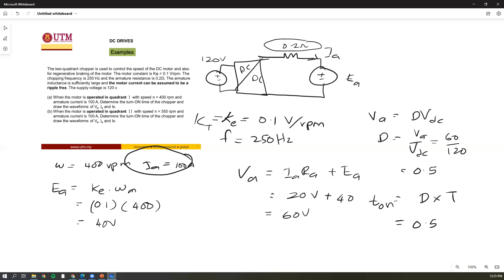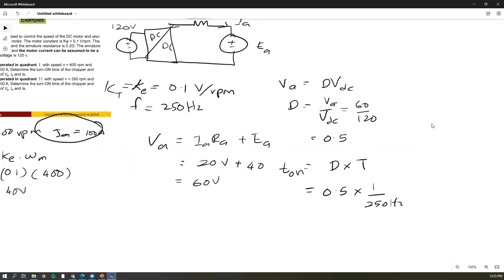Your t-on is D multiply with T, so your D is 0.5 multiply with 1 over frequency which is 250 hertz. If not mistaken, the value is 2 milliseconds.